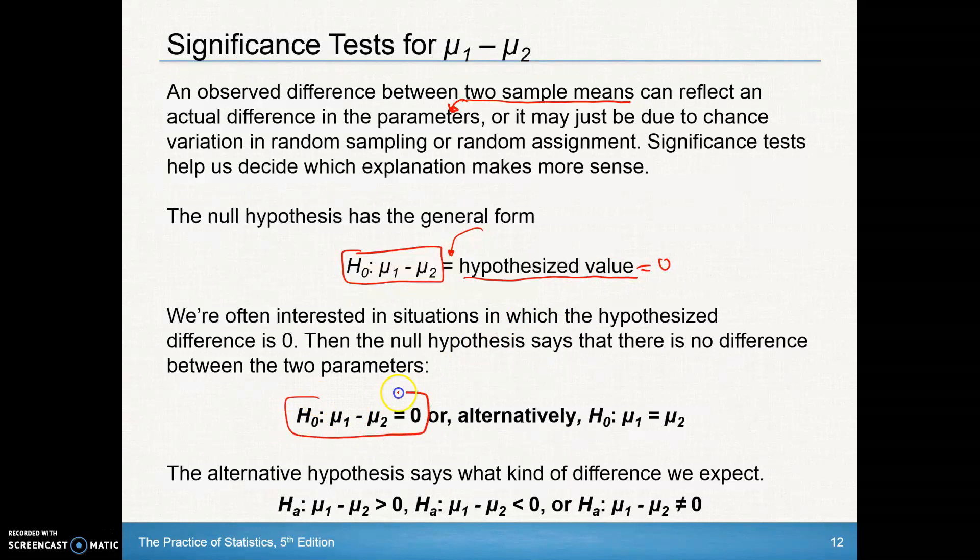The difference between our two means should be zero. Many times we just like to write it like this and do a little algebra—add μ sub two to both sides to show this equality.